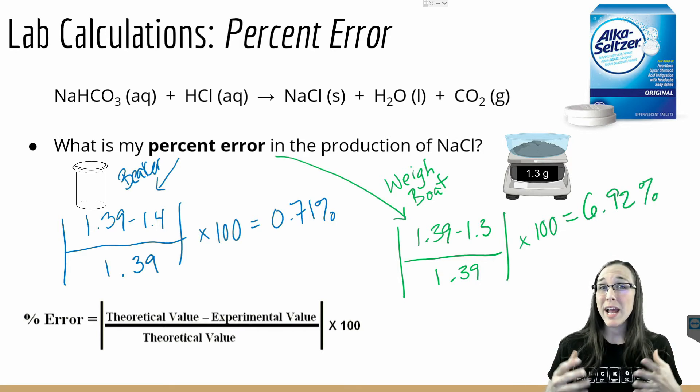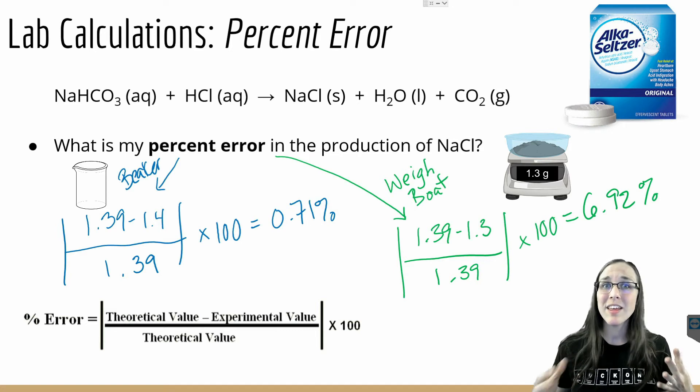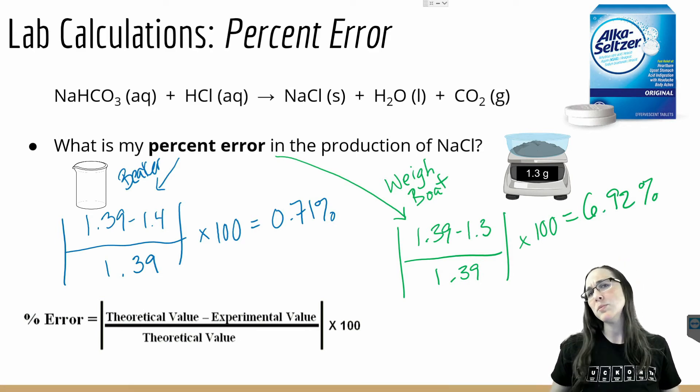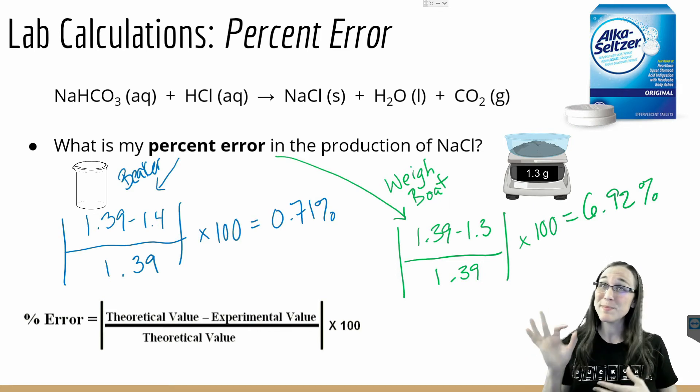Now what does this mean? If I were to have a really large percent error, say like 80 percent error, that would mean that I was 80 percent wrong. I literally had 80 percent of errors in my lab. So to have 6.92 percent error or 0.71 percent error is pretty good.